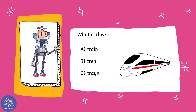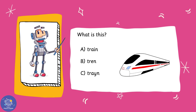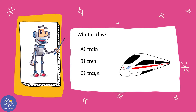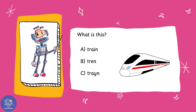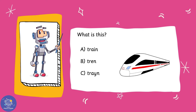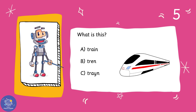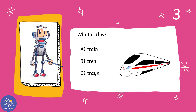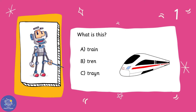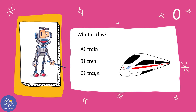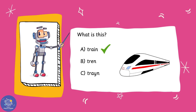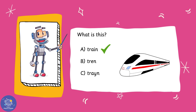Now you try. What is this? What is the correct spelling — A, B, or C? Well done! Train, with A-I. Train. Well done!